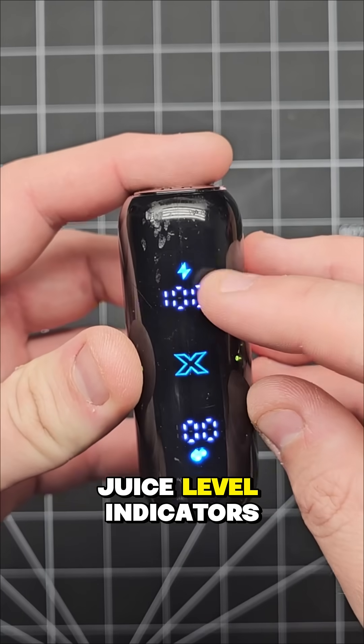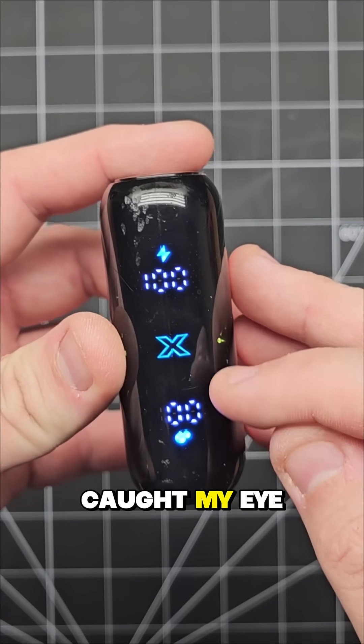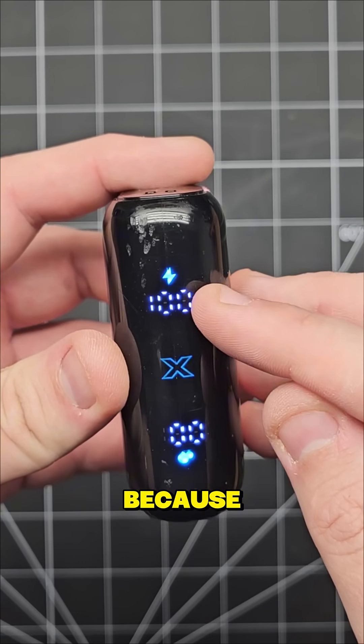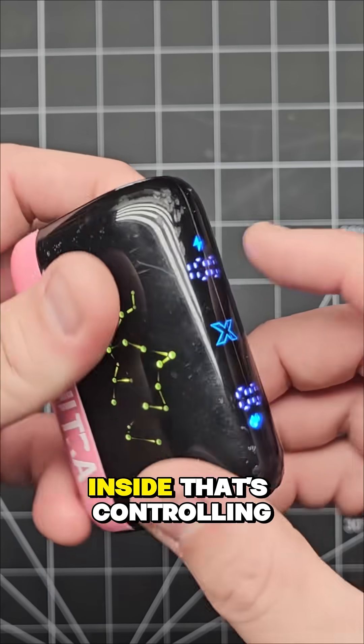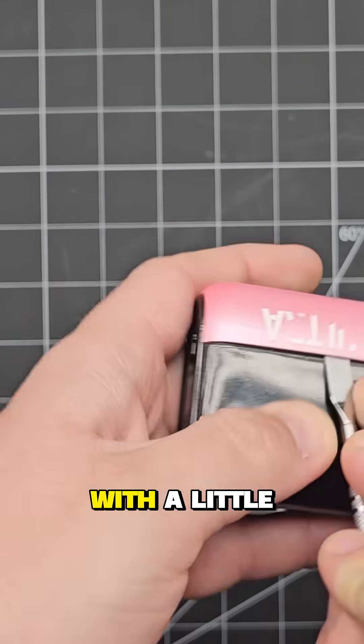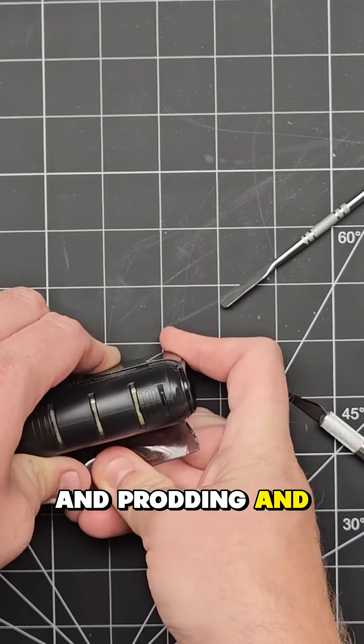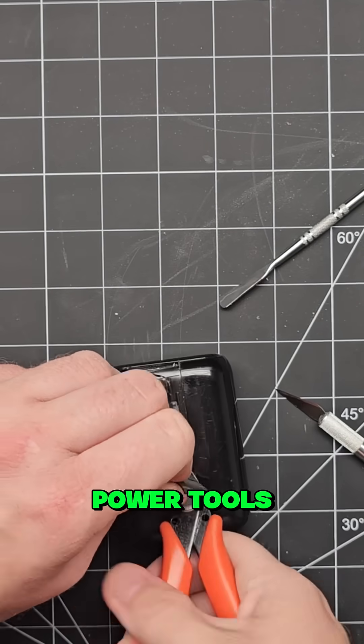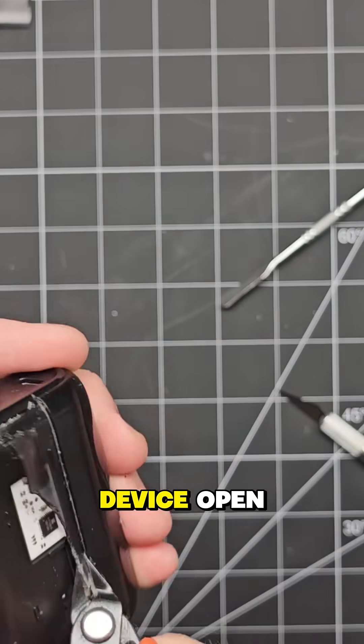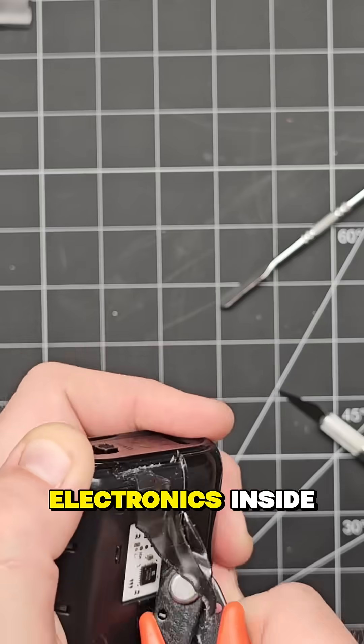These charge and juice level indicators are what initially caught my eye on this device, because there must be a microcontroller inside that's controlling them. With a little bit of poking, prodding, prying, and even some power tools, I was able to get the device open to take a look at the electronics inside.